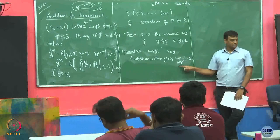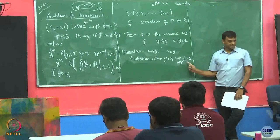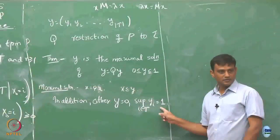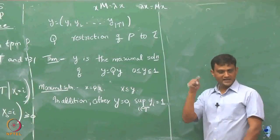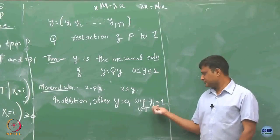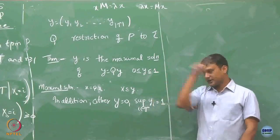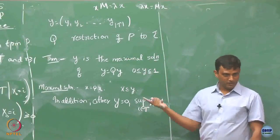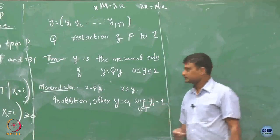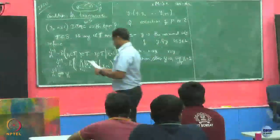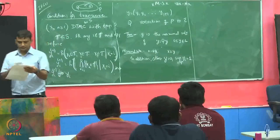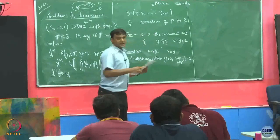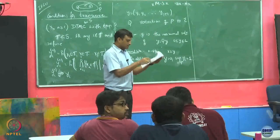If the supremum of Yi over all possible i is 1, that means there exists one i whose value is arbitrarily close to 1 — meaning if you start from some state i, you will remain in T with probability arbitrarily close to 1. So let us quickly see this and then see how we are going to utilize this result.